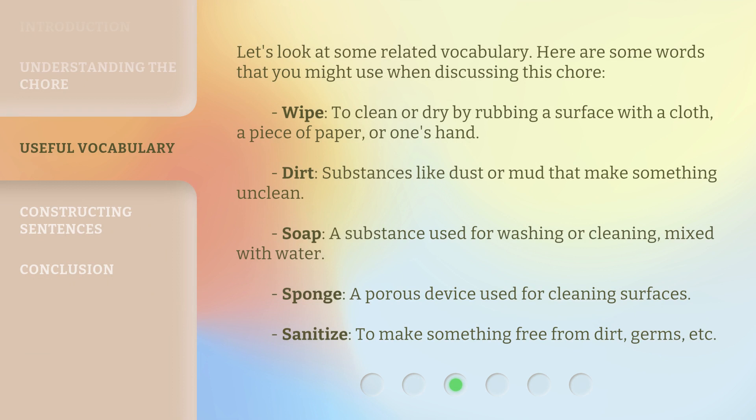Let's look at some related vocabulary. Here are some words that you might use when discussing this chore. Wipe: to clean or dry by rubbing a surface with a cloth, a piece of paper, or one's hand. Dirt: substances like dust or mud that make something unclean. Soap: a substance used for washing or cleaning, mixed with water. Sponge: a porous device used for cleaning surfaces. Sanitize: to make something free from dirt, germs, etc.